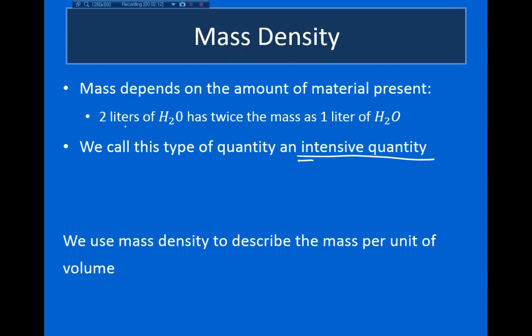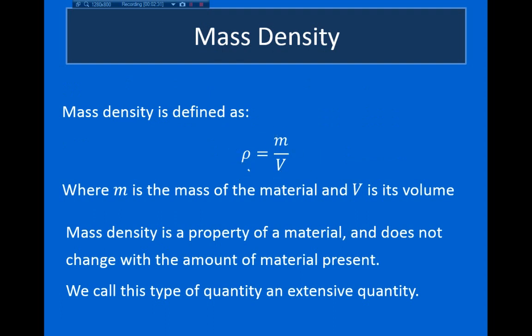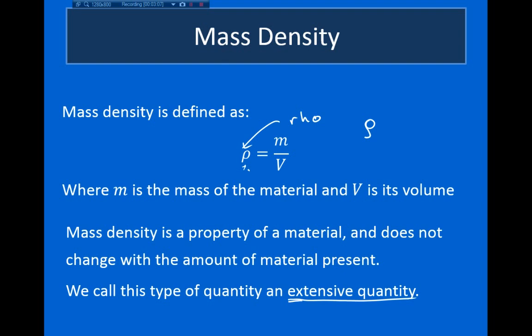Mass density describes the mass per unit volume. It's a property we could also use to describe other states of matter like solids and gases, but it's a property we'll need in order to write down mathematical relationships for liquids. Formally, mass density equals the mass of a material divided by its volume. This symbol is the lowercase Greek letter rho — I write it as a little curvy P. Mass density is a property of the material itself; it doesn't depend on the amount of material you have. These types of properties are called extensive, meaning they exclude the dependence on the amount of material.